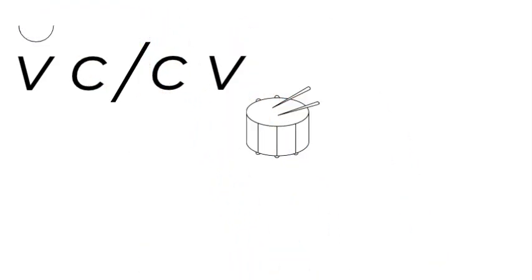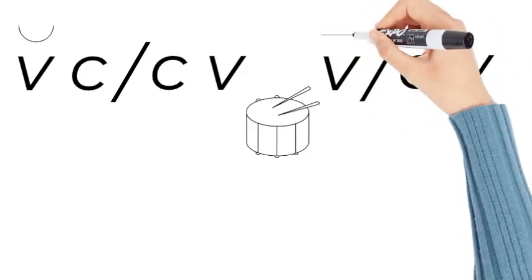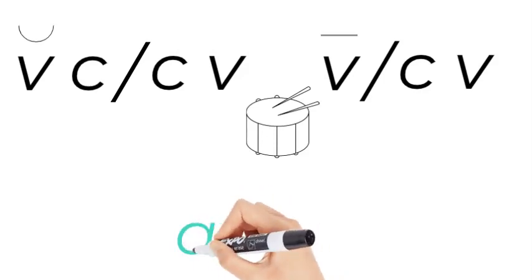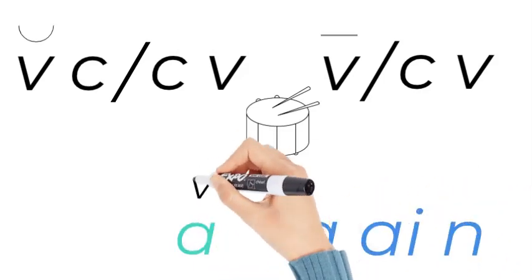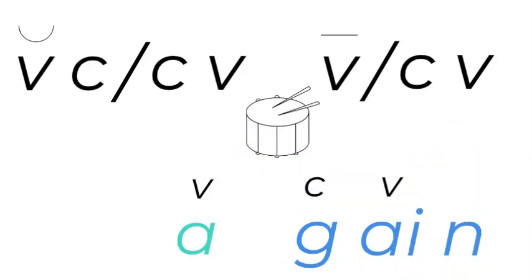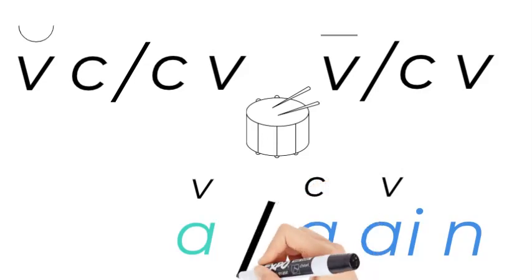Or this other pattern: vowel, consonant, vowel. It's a shorter pattern. Let's see which one we find in again. I can see there's a vowel, consonant, vowel. So it's the vowel, consonant, vowel pattern. We break it up after the vowel. Then we've got A-gain.